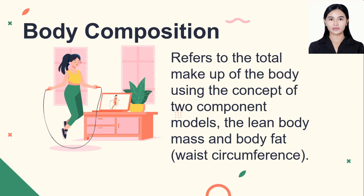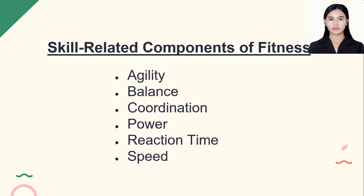The next one is body composition. It refers to the total makeup of the body using the concept of two-component models: the lean body mass and the body fat waist circumference. Given that you are in your teenage years, medyo okay pa yung katawan nyo, medyo hindi pa masakit yung likod nyo. So habang wala pang nangyayaring masama sa mga likod natin, kailangan nating i-stretch yung mga likod natin palagi. For example, we have online classes — we are sitting, using our phone or laptop. Right after the discussion, you can stand up and do some stretching, do walking, and drink a lot of water because it will help to improve your body composition. Those are the five health-related components of physical fitness.